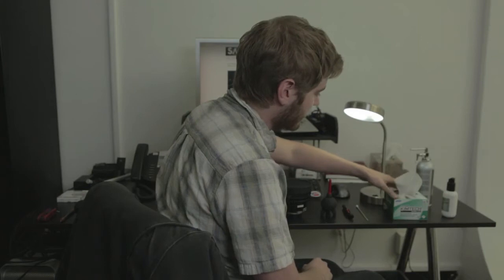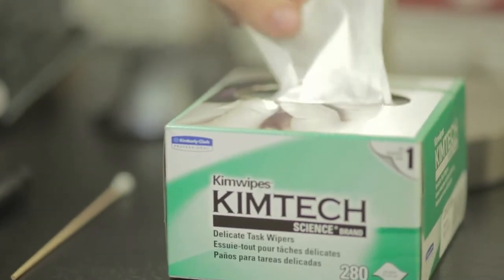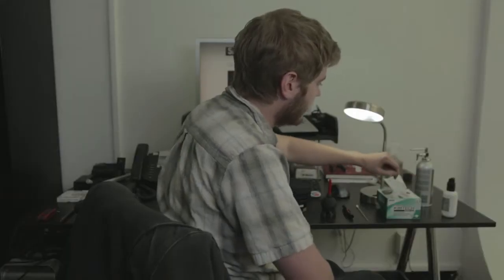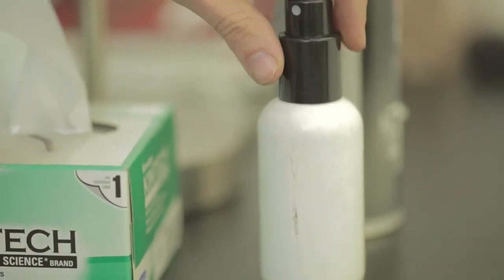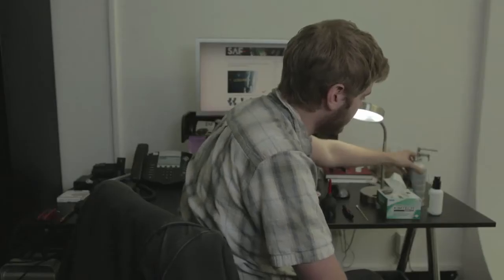then we've got lens wipes or critical surface tissues if it makes you sound a little smarter, and then on the very end here we've got Pancro which is an abrasive alcohol solution and canned air which is pressurized.